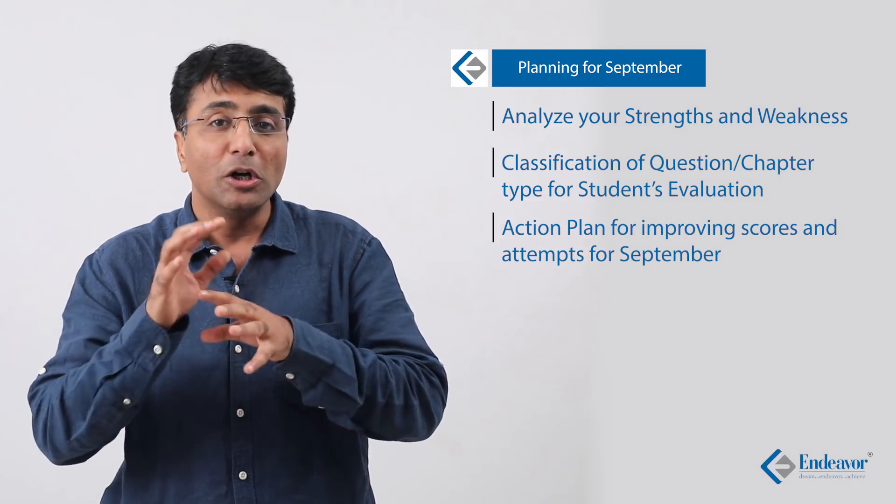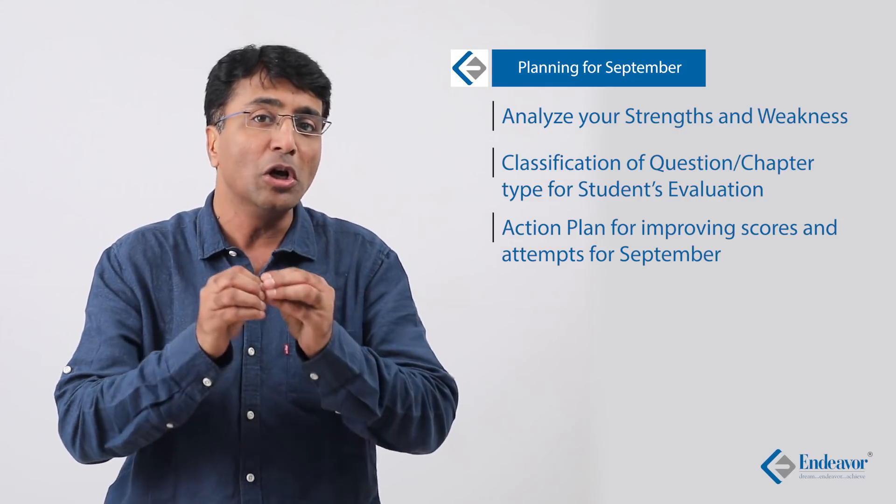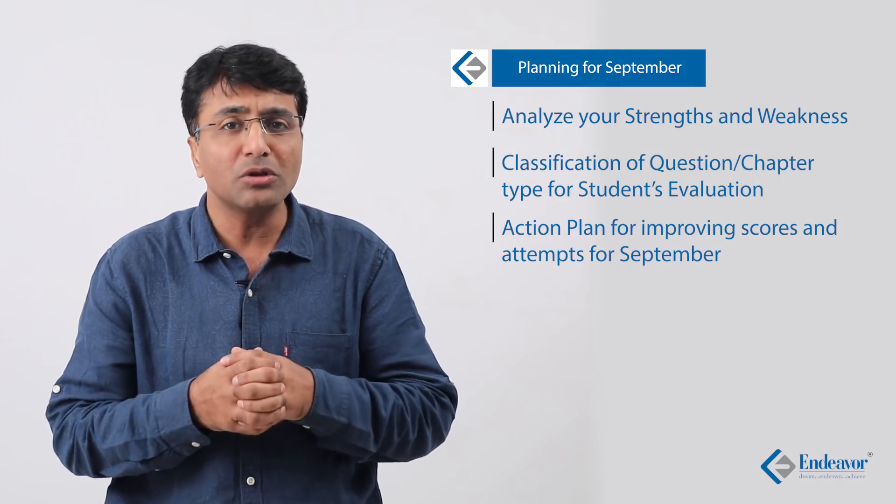In September, allocate two to four hours per day for the quantitative section, depending on your current preparation level. In this time, take around five to seven sectional tests in the month and spread the chapter revision over four weeks — week one attacking your weakest chapters, progressively improving until your accuracy reaches around 85-90% by week four. Spend around one to one-and-a-half hours daily on revision and around six to seven hours per week on writing and analyzing one or two mocks.